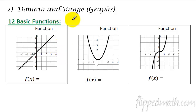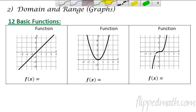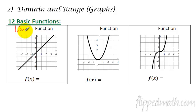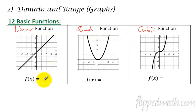Domain and range. Before we got into domain and range, we did the 12 basic functions — just a reminder that you do want to remember these. This one's linear, this one is quadratic, this one's cubic. These are the basic ones, so you're going to want to look over those again. And of course you'll have to know the formulas of the parent functions — that one's x squared, and that one's x cubed. So all 12 of them, you need to know those.